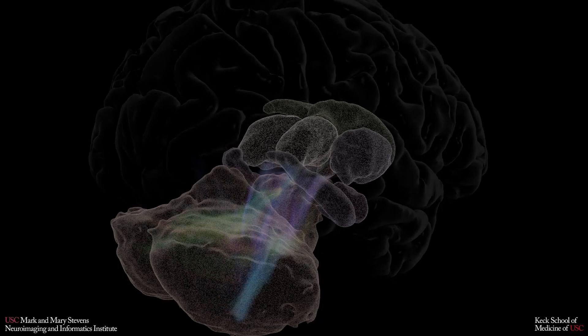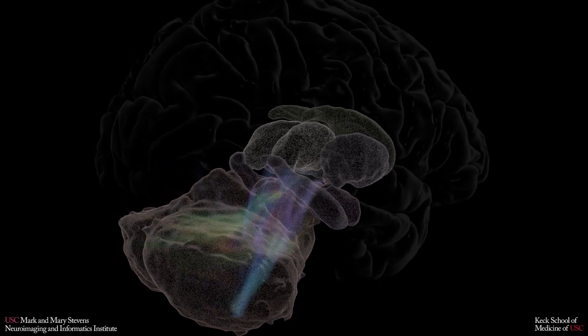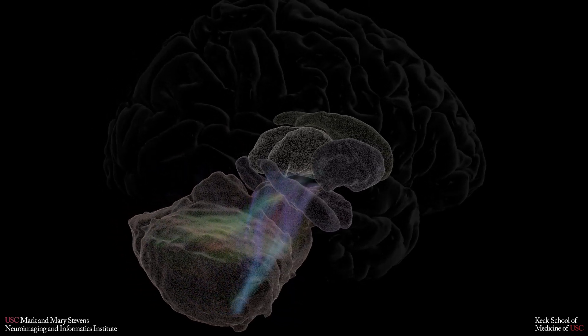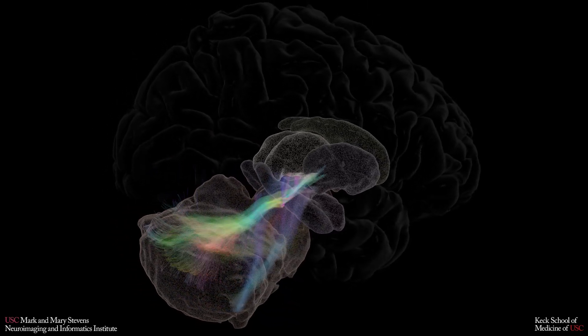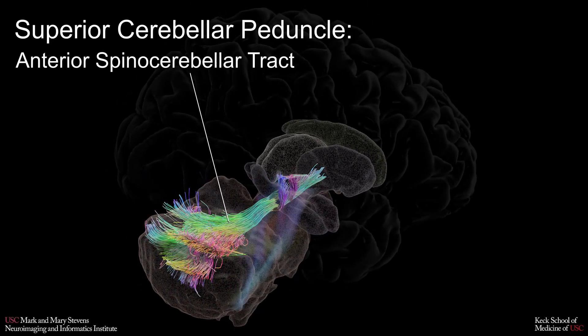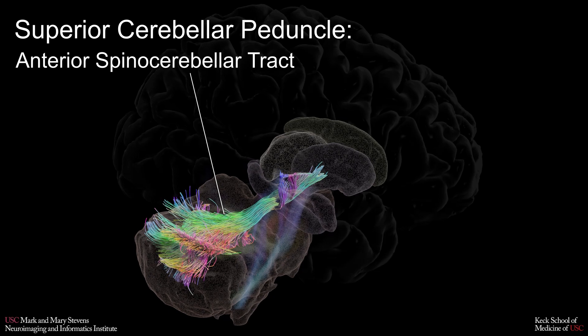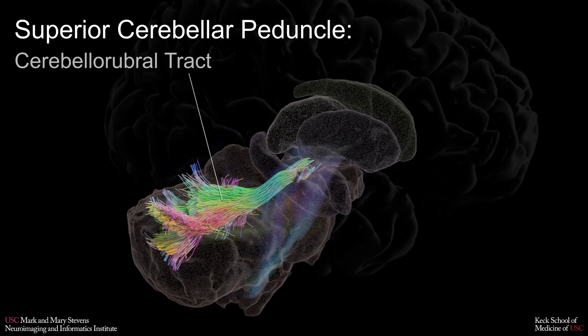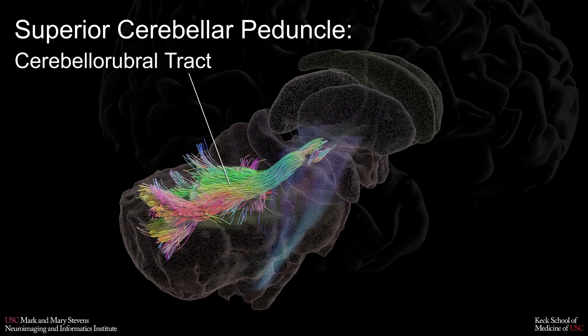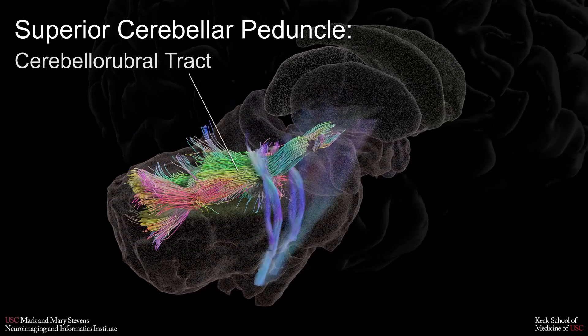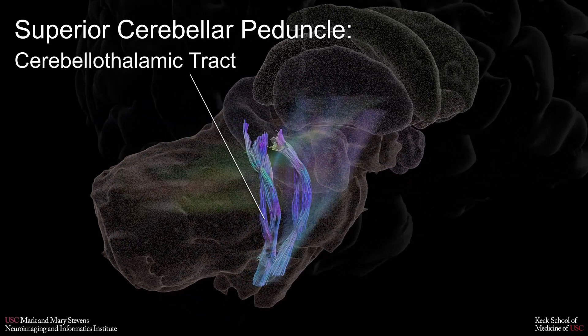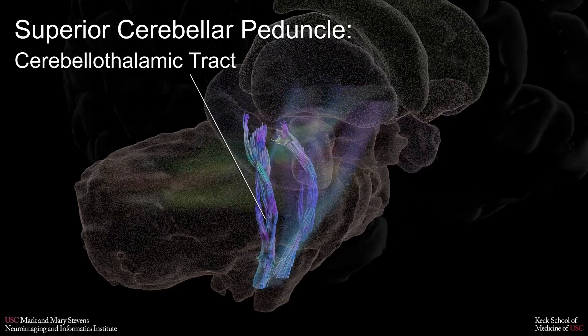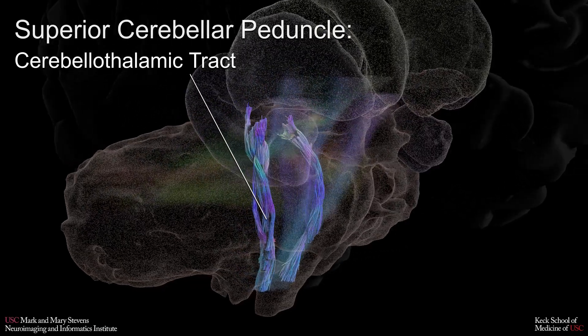More specifically, the superior cerebellar peduncle is mainly composed of the anterior spinocerebellar tract, the cerebellarubral tract, and the cerebellothalamic tract.